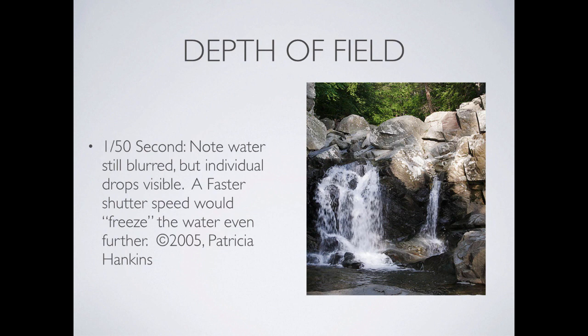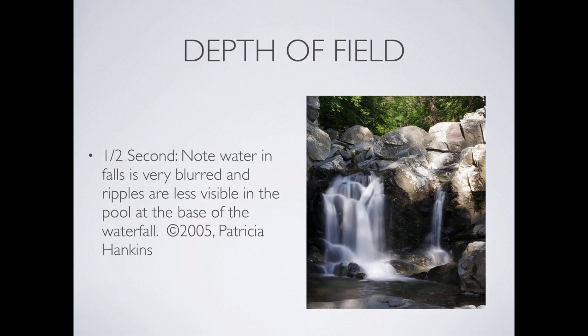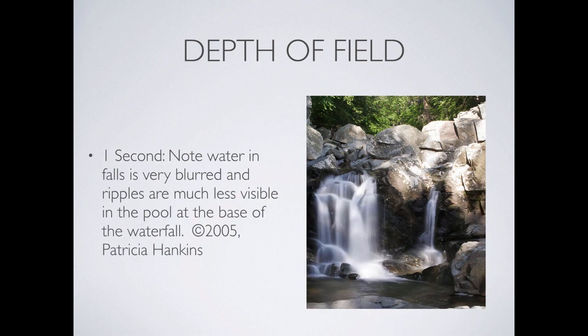Here's a shutter speed example: at 1/50th of a second, you can still see individual drops of water. At 1/10th of a second, those individual drops start becoming streaks. At half a second, things get much more blurred and the ripples in the pool smooth out significantly. At one second, it's very smooth. But if the shutter speed is too long, we start losing detail in the bright areas like those rocks because so much light is coming in.